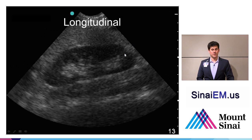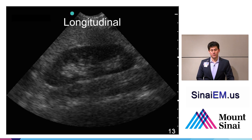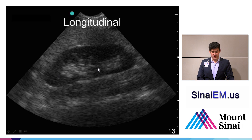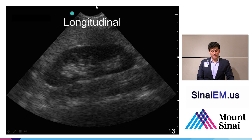We look at kidneys in two different planes. Any structure we image with ultrasound, we want to look at in two planes. A longitudinal view of the kidney ideally goes through the largest area of the kidney, containing both the superior and inferior pole. The probe marker is held up towards the patient's head, so anything on the probe marker's side of the screen is towards the patient's head, and anything on the other side is towards the patient's feet.